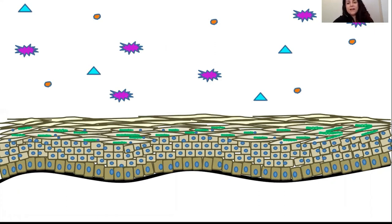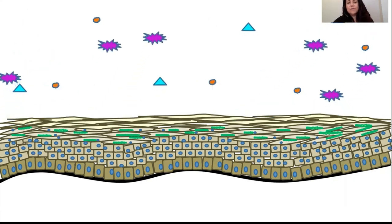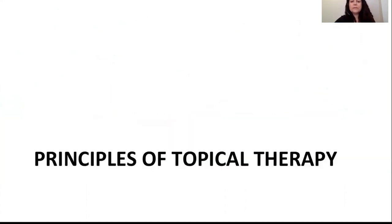With an intact barrier, things such as microbes, allergens, and irritants don't gain entry into the skin. When there's a disorder with a barrier defect — for example, eczema, where those cells aren't tightly packed together — that will allow irritants and microbes to enter the skin. That's a little bit about how the skin and the upper layer of the skin are structured and what the function or role is.